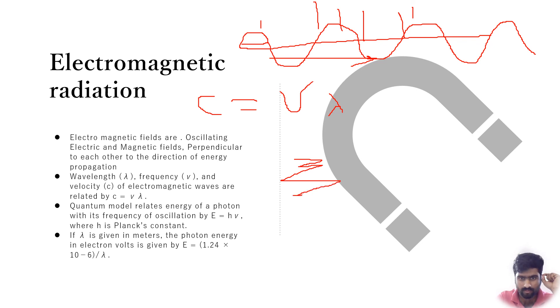Now coming to the quantum model, it relates the energy of a photon with its frequency of oscillation. It is given by the equation E equals h nu, where h is Planck's constant and nu is frequency. If lambda is given in meters, the photon energy in electron volts is given by E equals 1.24 times 10 to the power negative 6 divided by lambda. So this ends the chapter on structure of matter.